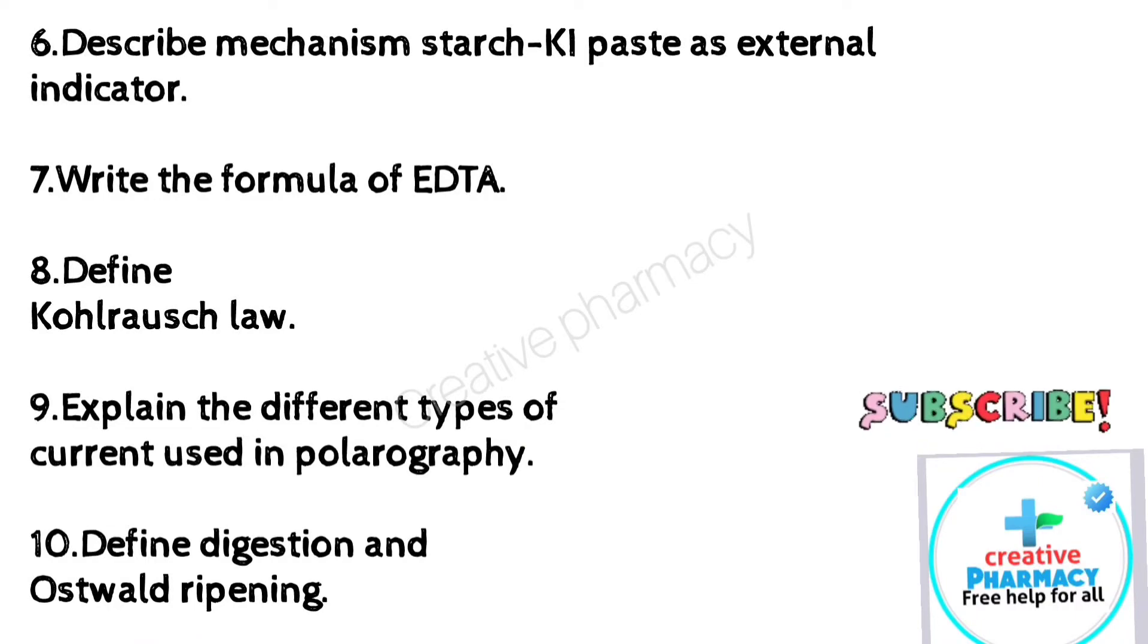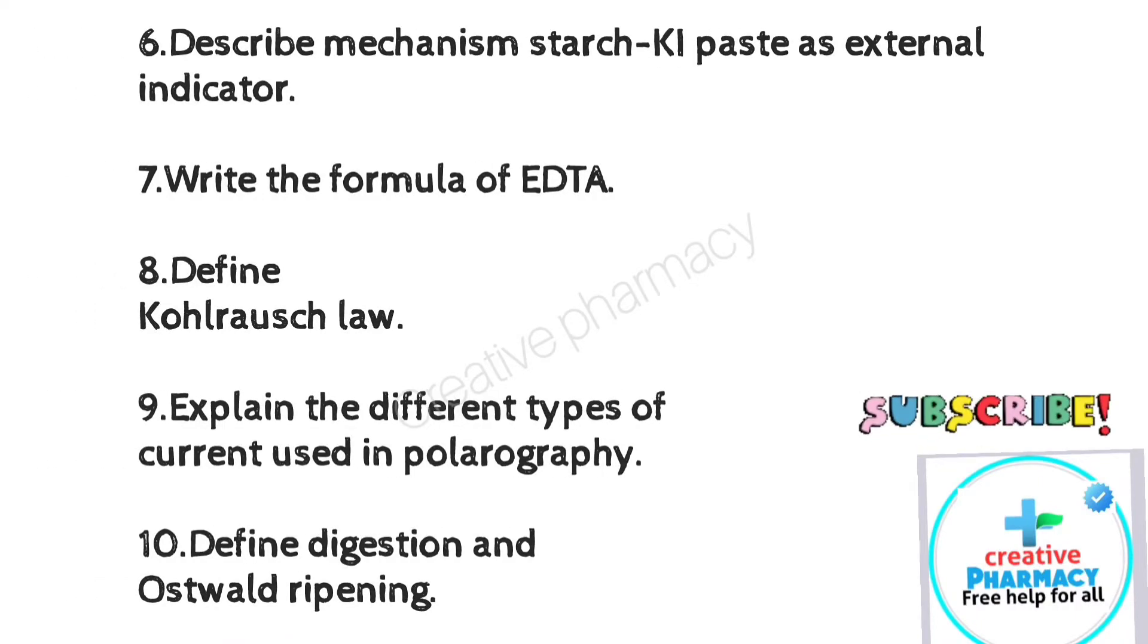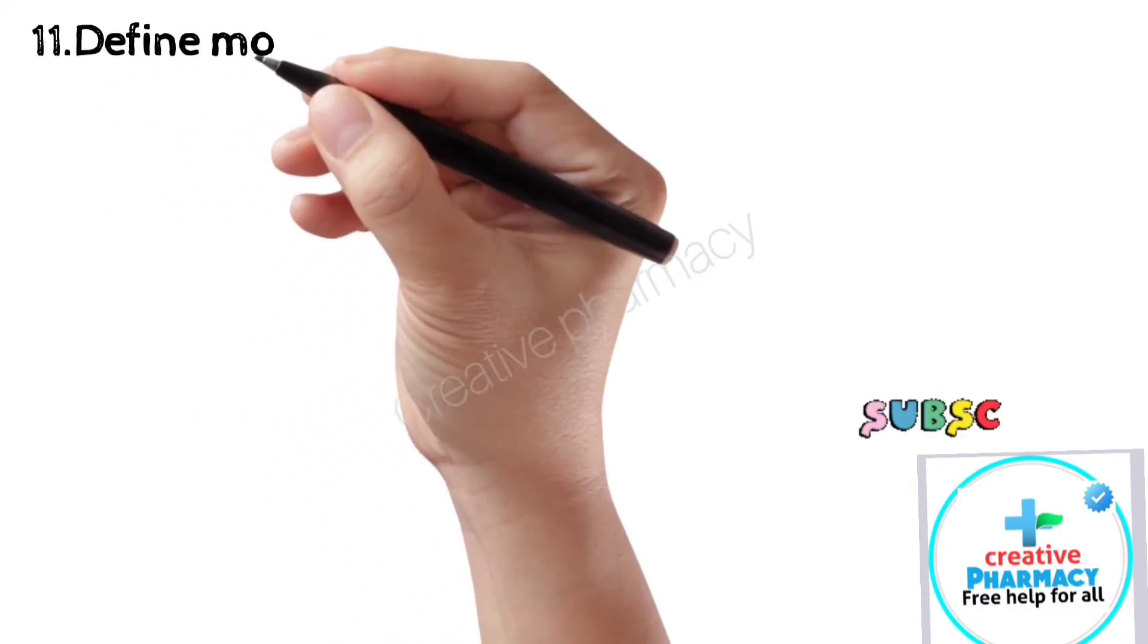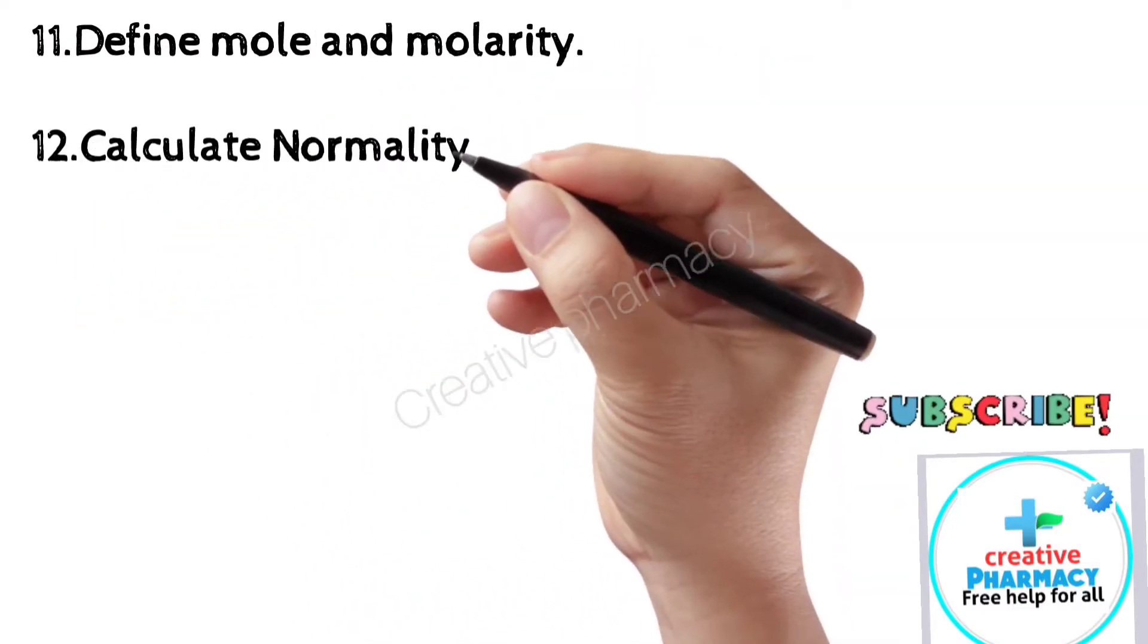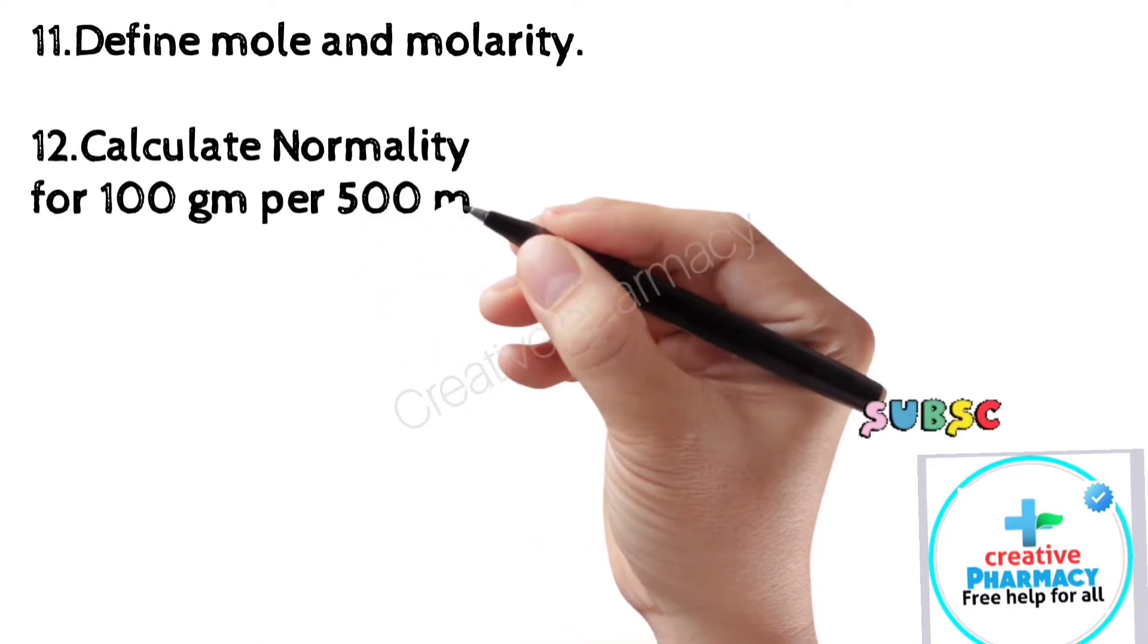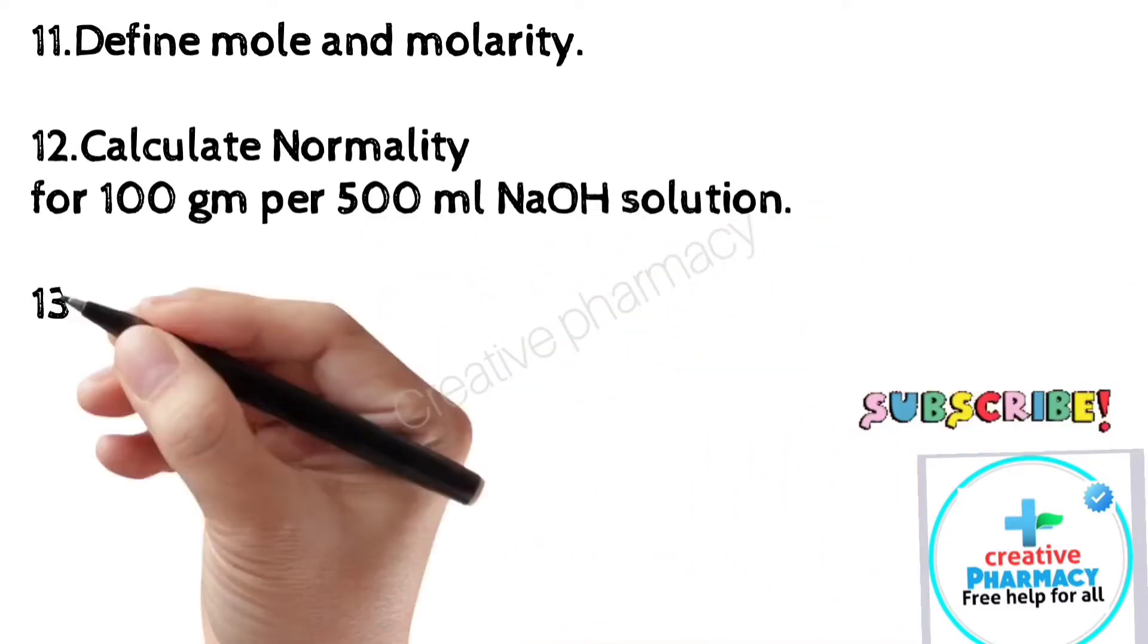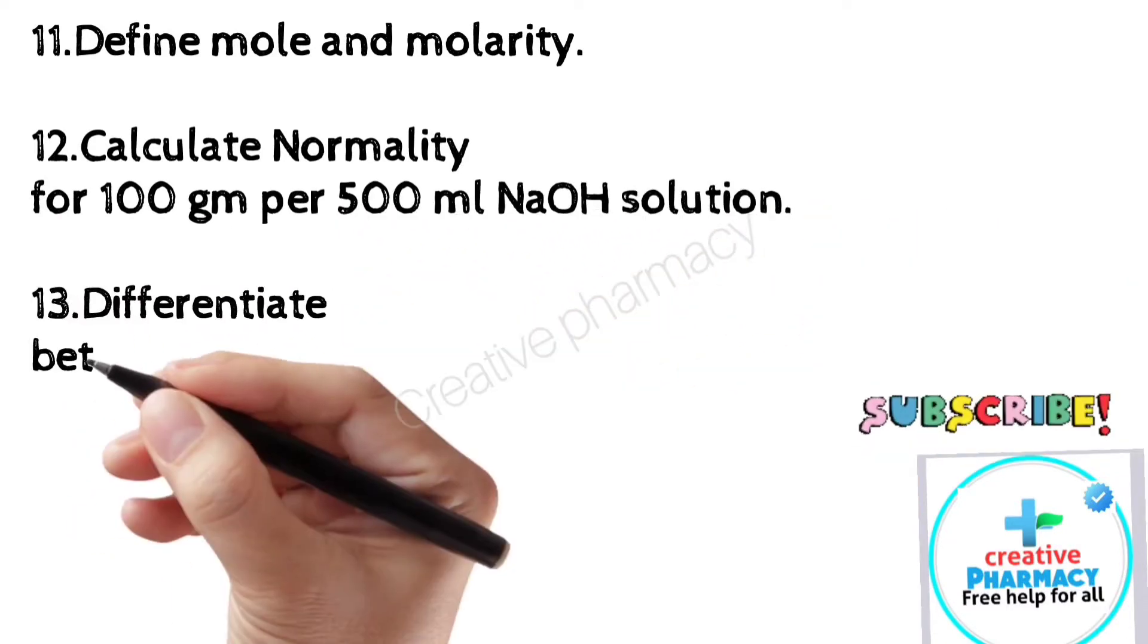10. Define digestion and Ostwald ripening. 11. Define mole and molarity. 12. Calculate normality for 100 gm per 500 milliliters N solution. 13. Differentiate between acid and base.